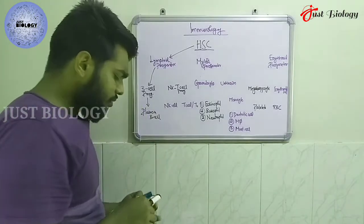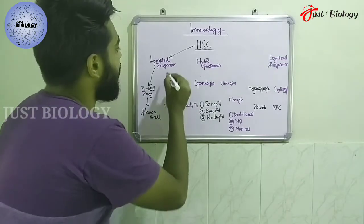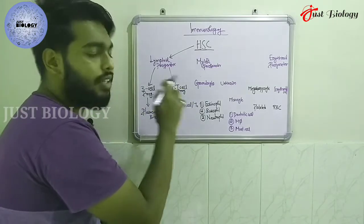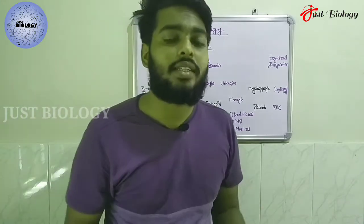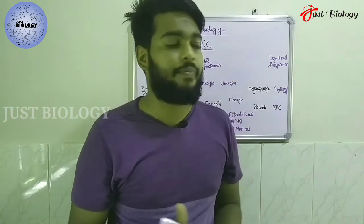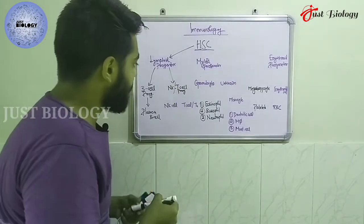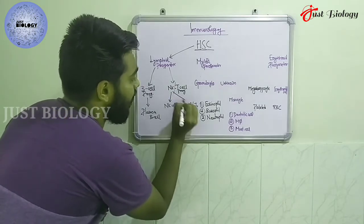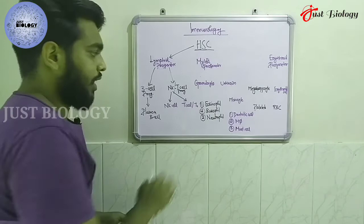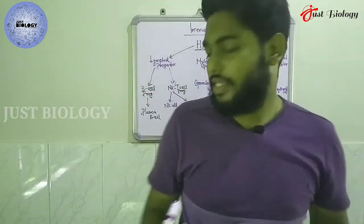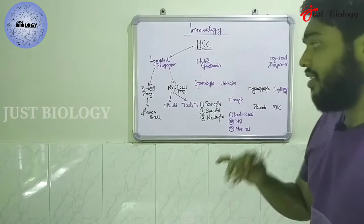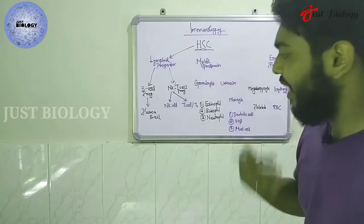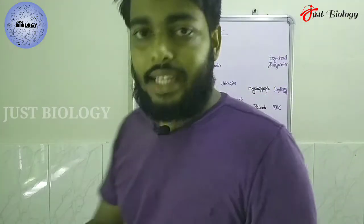The second progenitor which arises from the lymphoid progenitor is the NK or T cell progenitor. The NK and T cell progenitor are two types of cells — one is called the NK cell and the other is T0, where T0 refers to naive or inactive T cells.